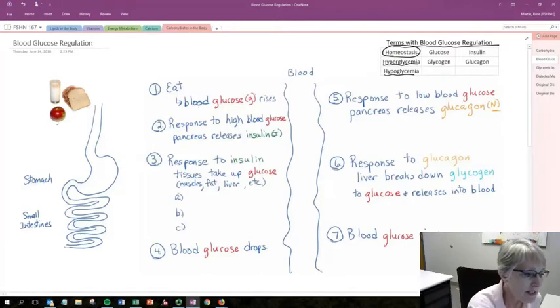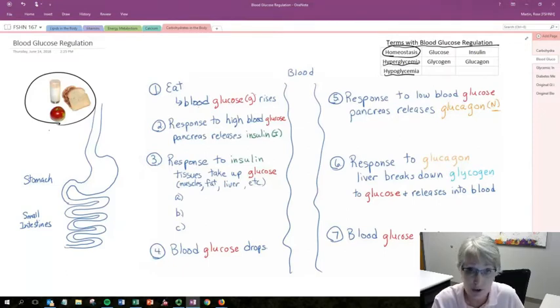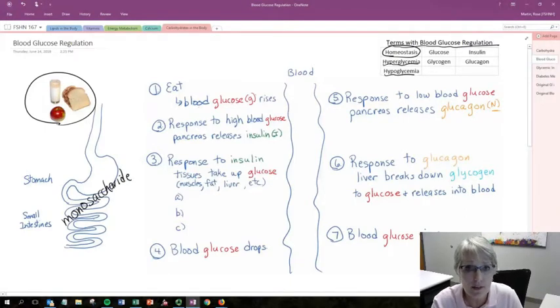If we think about these steps, the first thing I want us to think about is after we eat. We've got a peanut butter and jelly sandwich, glass of milk, and apple. We've got all different types of carbohydrates there. We've got starch, disaccharides, and monosaccharides. If we remember those steps of digestion, we know that all of them are going to be converted to monosaccharides, single sugar units, and that's what's going to be absorbed.